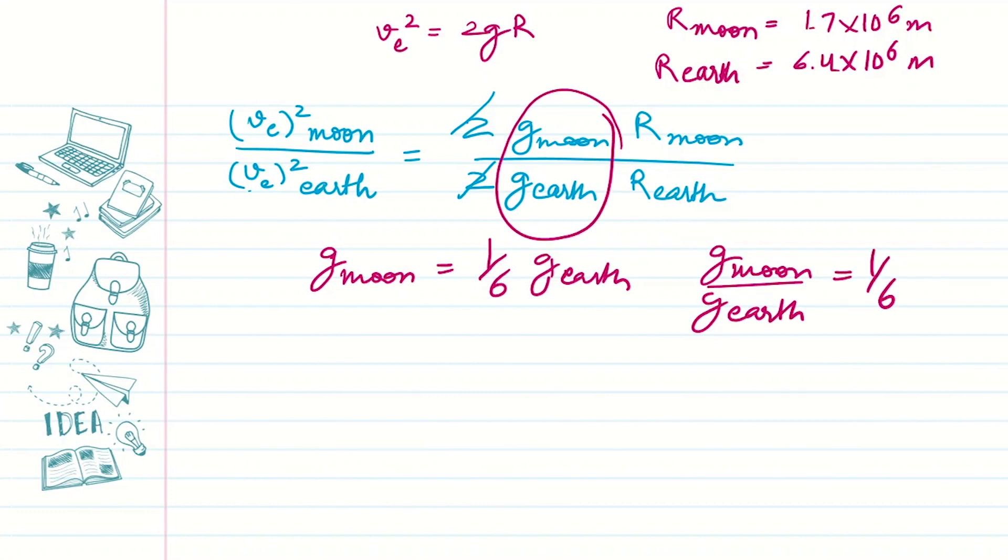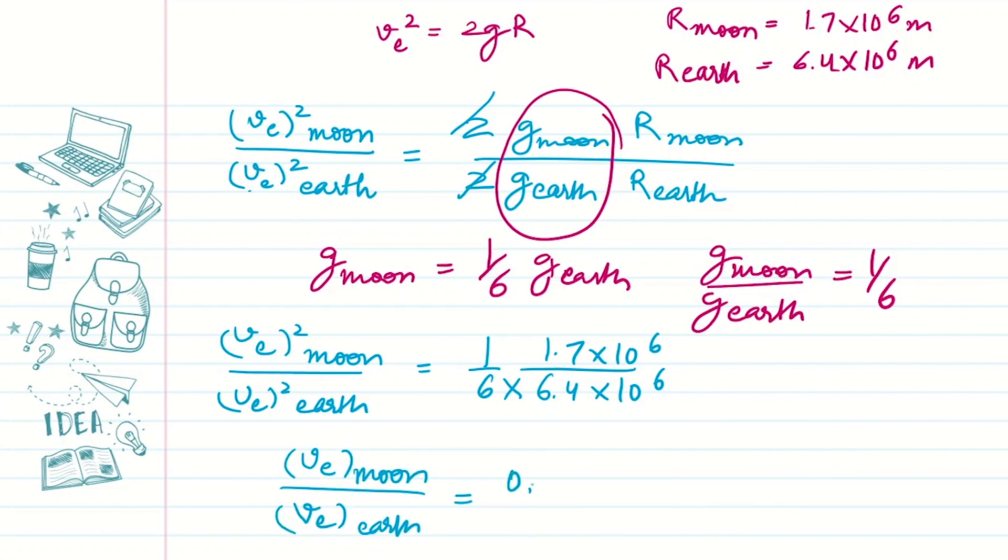So the escape velocity square of Moon over Earth is 1 over 6 times radius of Moon is 1.7 into 10 raised to power 6, and radius of Earth is 6.4 into 10 raised to power 6. So our ratio comes out to be 0.21.